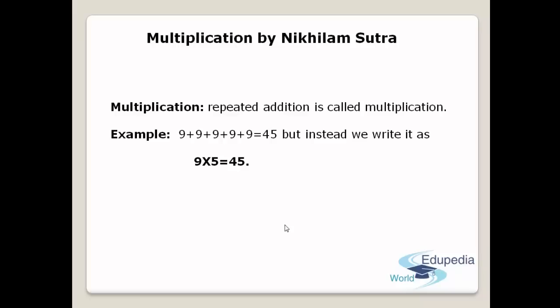For example, if I take the number 9 and add it 5 times — that is 9 plus 9 plus 9 plus 9 plus 9 — no doubt you will get 45. But instead, what we write is 9 into 5 equals 45. You can see this in the table of 5. Now you have an idea of what multiplication is.